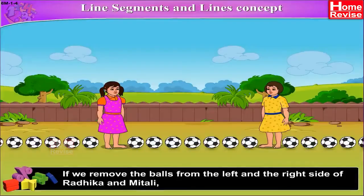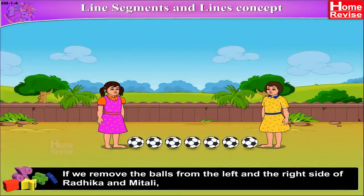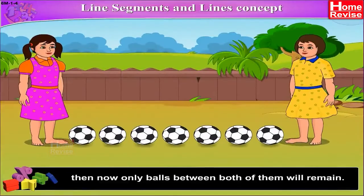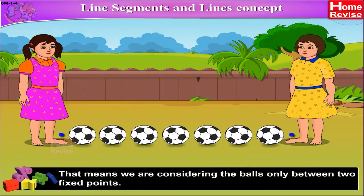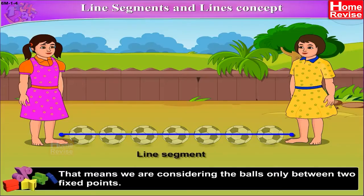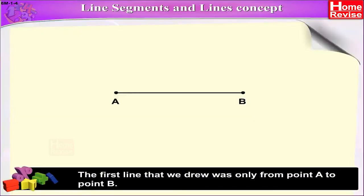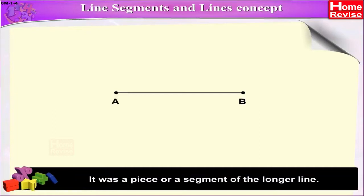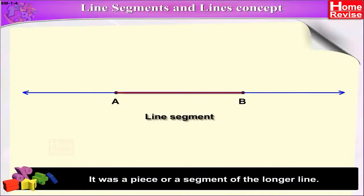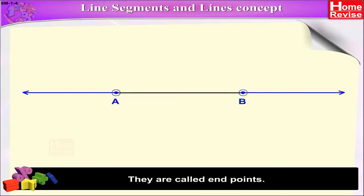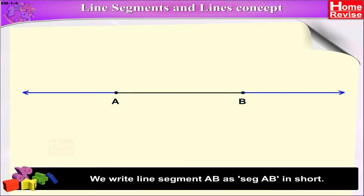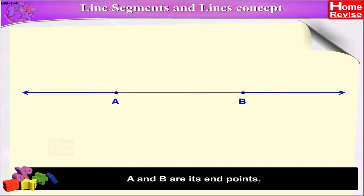Students, if we remove the balls from the left and the right side of Radhika and Mitali, then only balls between both of them will remain. That means we are considering the balls only between two fixed points. That set of points between the two fixed points is called a line segment. The first line that we drew was only from point A to point B — it was a piece or a segment of the longer line. A line segment has two points showing its limits; they are called endpoints. We write line segment AB as segment AB in short. A and B are its endpoints.